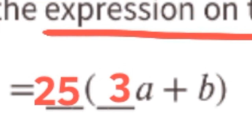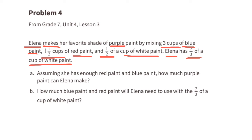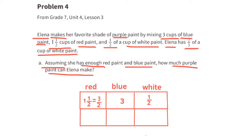Problem number four from 7th grade unit 4 lesson 3: Elena makes her favorite shade of purple paint by mixing 3 cups of blue paint, 1 and a half cups of red paint, and a half cup of white paint. Elena has two-thirds of a cup of white paint. Part a: assuming she has enough red and blue paint, the normal batch requires 3 cups of blue, one and a half cups of red, and a half cup of white, making 5 cups of purple paint total.